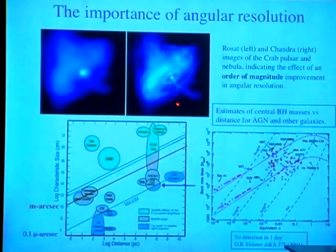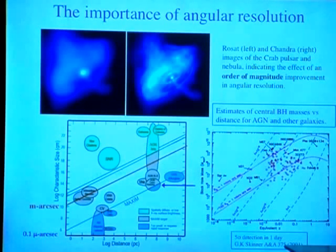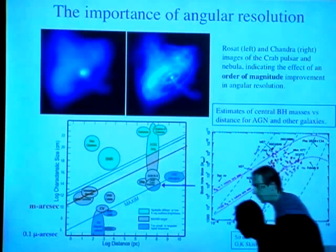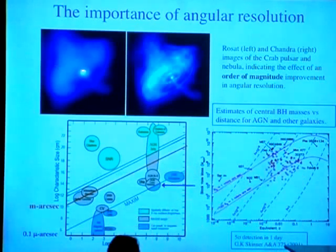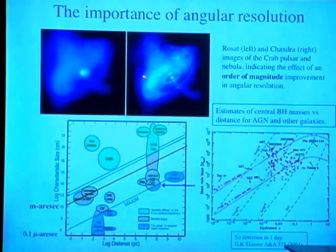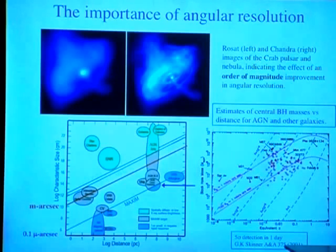In any telescope, angular resolution is important. A picture is worth a thousand words. These two pictures show the impact of an order of magnitude improvement in angular resolution — from about ten arc seconds to about one arc second — viewing the Crab Nebula and the pulsar. You can see that you could resolve finer features of the astrophysical object.